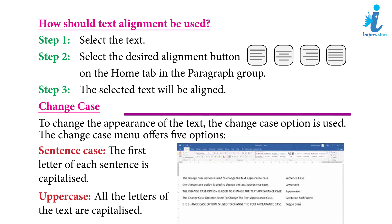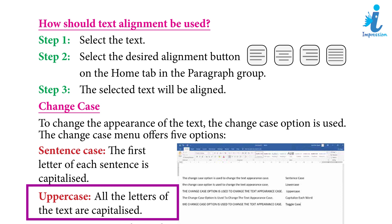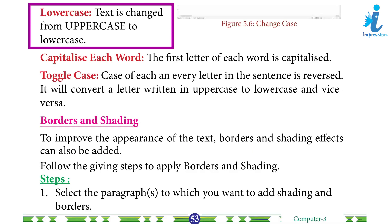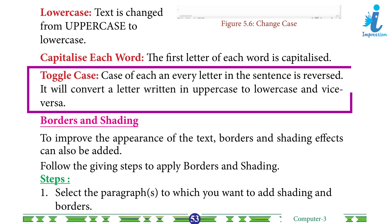Change Case: To change the appearance of the text, the Change Case option is used. The Change Case menu offers five options: Sentence Case — the first letter of each sentence is capitalized; Uppercase — all letters are capitalized; Lowercase — text is changed from uppercase to lowercase; Capitalize Each Word — the first letter of each word is capitalized; Toggle Case — the case of each letter is reversed, converting uppercase to lowercase and vice versa.